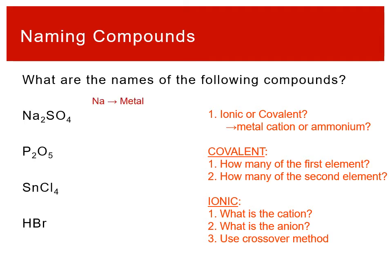Na₂SO₄ — Na is a metal, sodium is a metal, so this is an ionic compound. Na is the cation, so we can call it sodium. That means the rest of this has to be the anion. We can see that it is more than one atom — that should be giving us some alarm bells. This is a polyatomic anion. So I only have one atom for my cation, so everything else needs to be an anion. I should look up my polyatomics. SO₄ is called sulfate. So this compound is sodium sulfate.